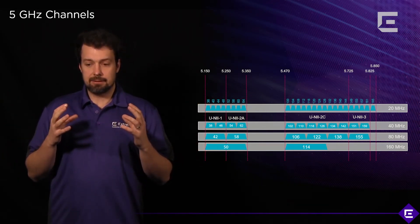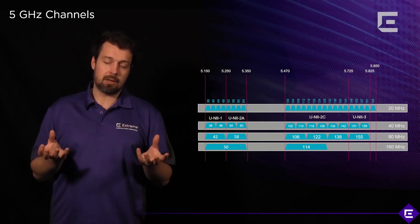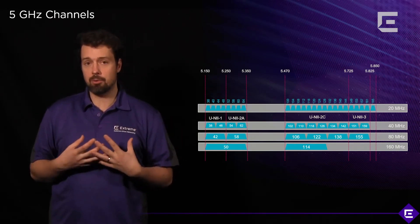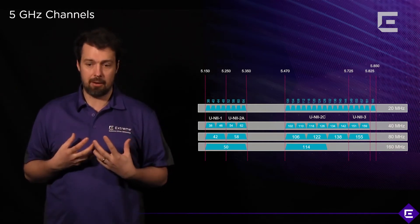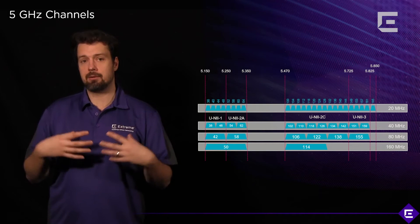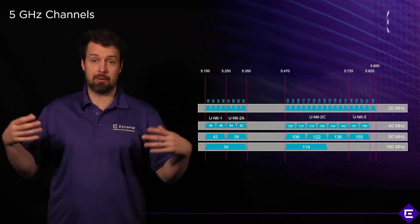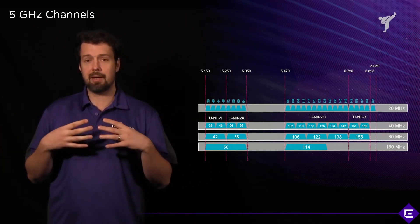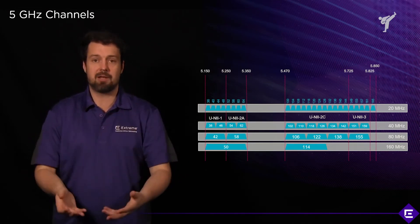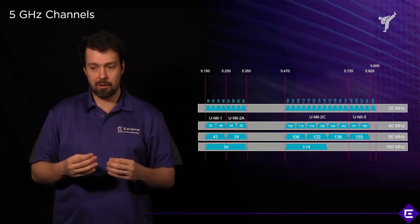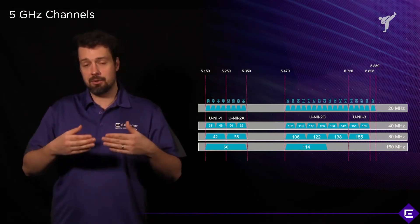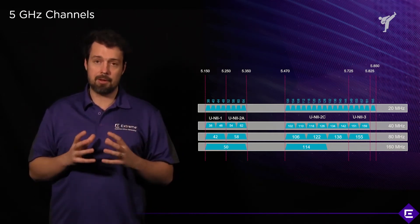We're mainly talking about 20MHz channels, but you do have the option of bonding channels together. Every time you bond channels you're essentially doubling the available bandwidth and the amount of traffic you can push through. You can go from 20MHz to 40MHz, from 40MHz to 80MHz, and from 80MHz to 160MHz.